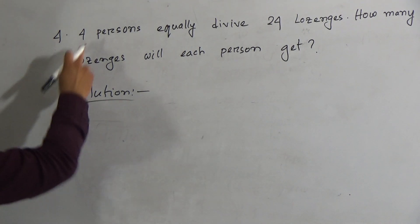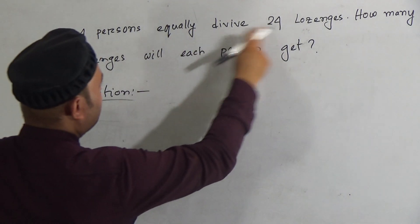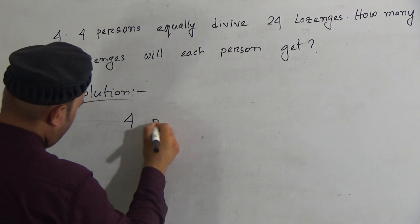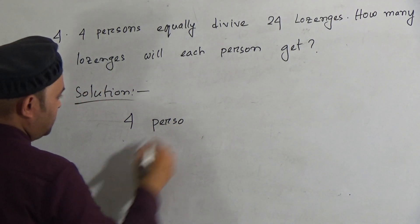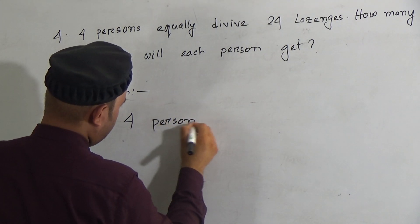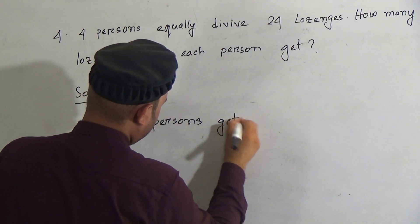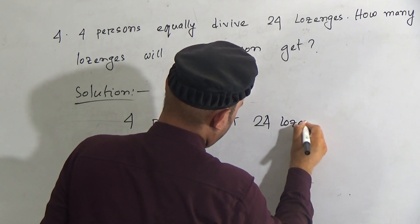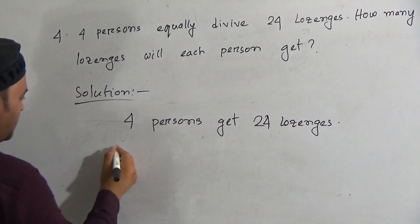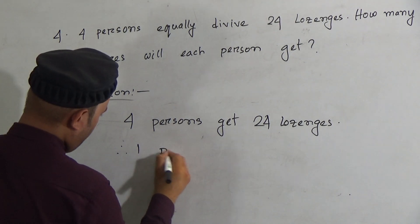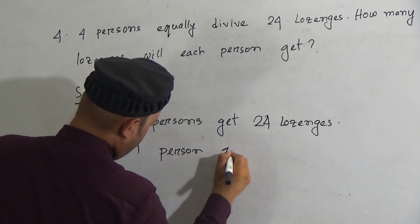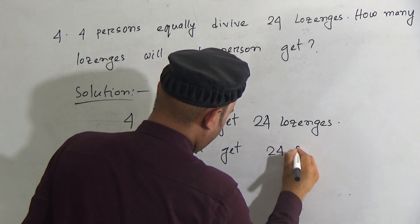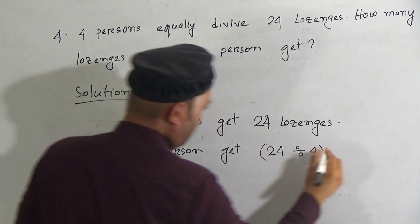Now the solution: here 4 persons equally divide 24 lychees, so we can write: 4 persons get 24 lychees. Therefore one person gets 24 divided by 4 lychees.